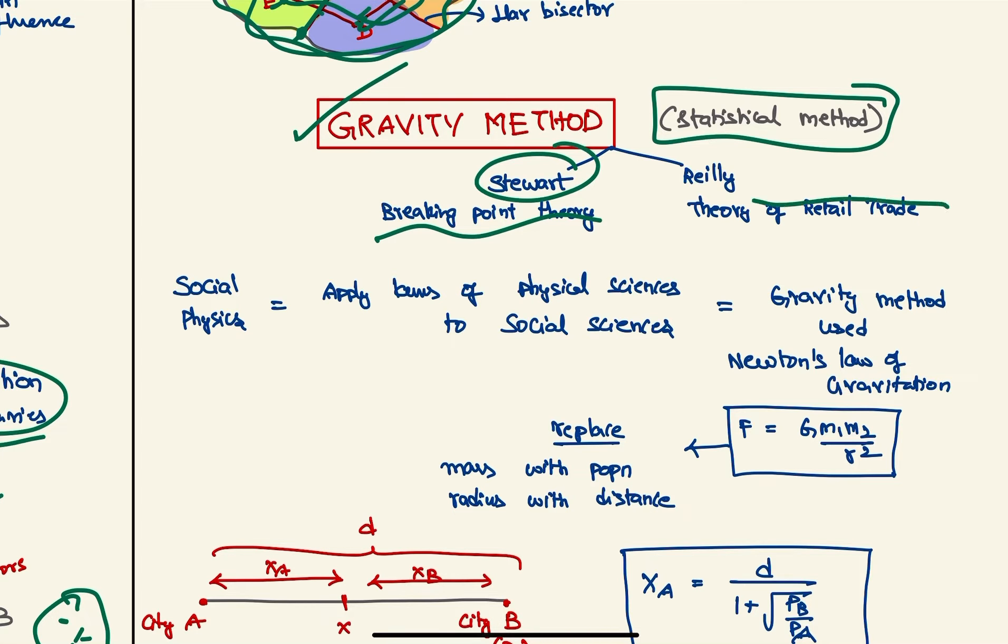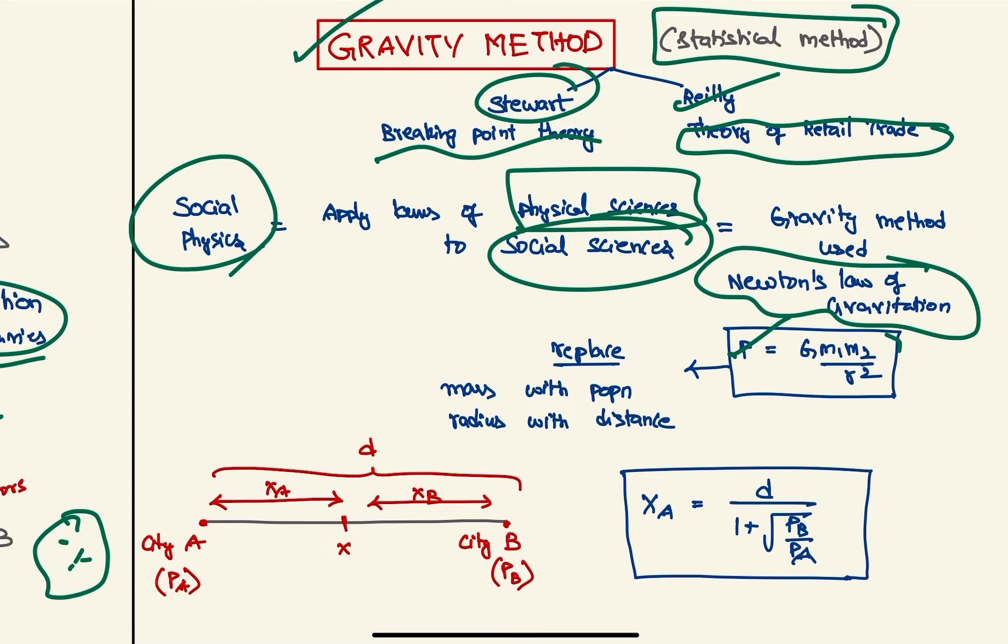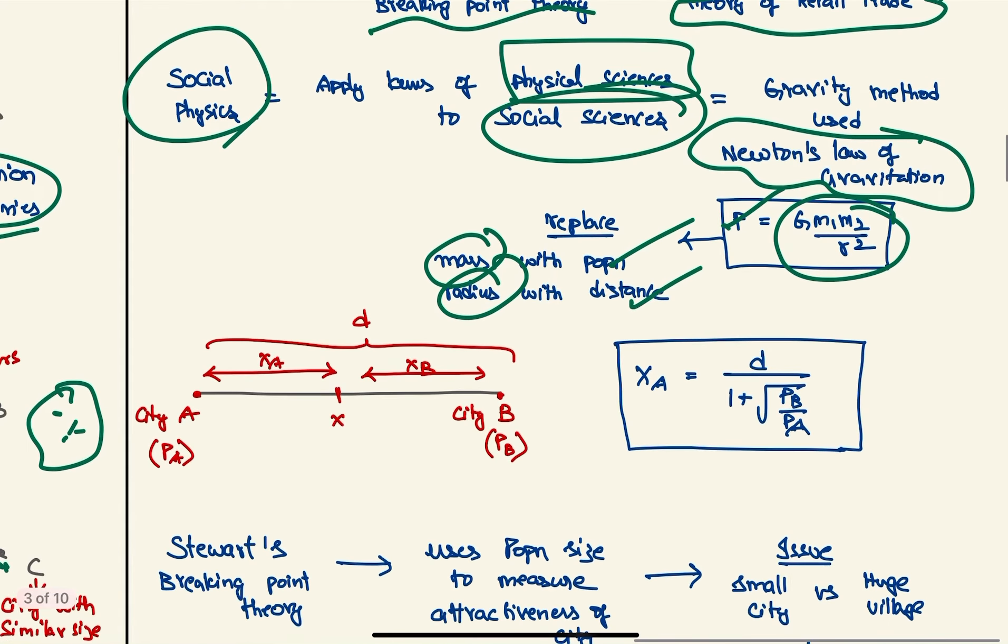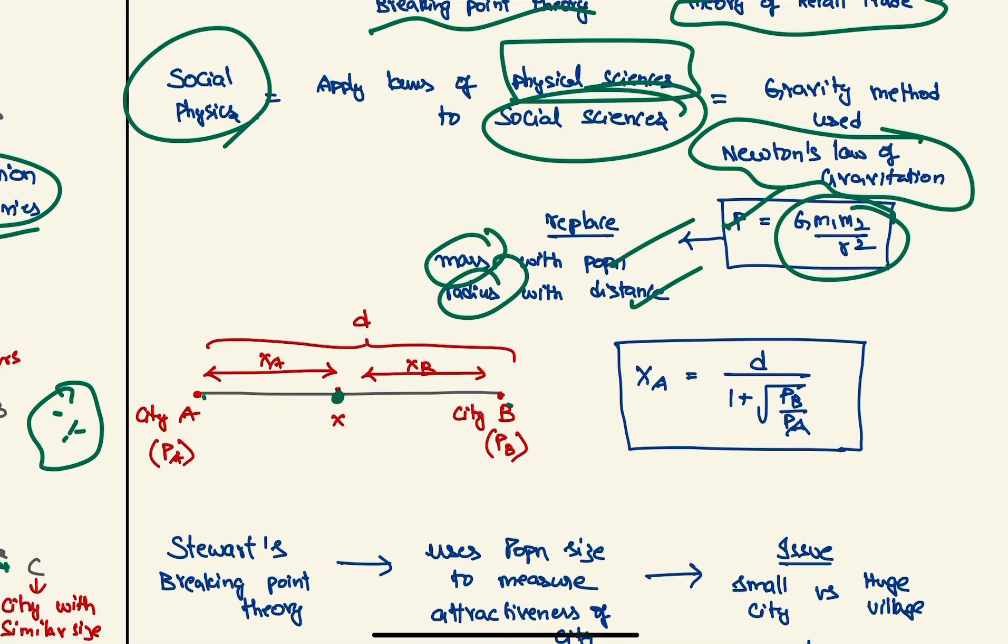So there are two theories given here: breaking point theory given by Stewart, and theory of retail trade given by Reilly. This is basically social physics—that is, application of laws of physical sciences to social sciences. In this method we are applying Newton's laws of gravitation, which is F = G × m1 × m2 / r². Here mass is replaced by population, radius is replaced by the distance.